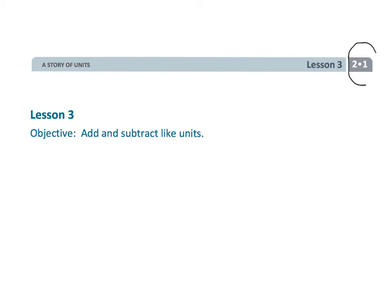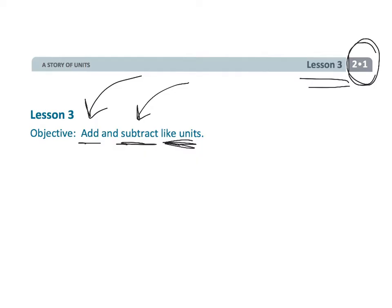This is Grade 2, Module 1, Lesson 3. We're going to continue reviewing first grade, but in this lesson we're going to be adding and subtracting like units. That means we're going to add tens to tens and ones to ones, and similarly subtract tens from tens and ones from ones. Let's do some practice and see what that means.